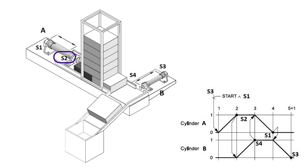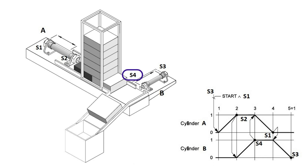Then when S2 and S3 signals are present, cylinder B should extend, and it produces the S4 signal at the fully extended position. Then when S4 and S2 signals are present, cylinder A retracts and produces the S1 signal at the fully retracted position. Then cylinder B retracts, taking the signals S1 and S4.